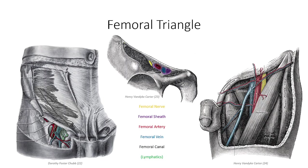NAVEL stands for: Nerve, Artery, Vein, Empty, Lymphatics. Note that the latter three structures are encased in an extension of the superficial fascia known as the femoral sheath, but the femoral nerve is external to this. From a surface anatomy perspective, the femoral triangle is an important landmark. In the case of severe bleeds in the lower limb, pressure to the femoral triangle, where the femoral artery pulse can be palpated, can temporarily restrict blood flow to prevent excessive losses in blood volume.